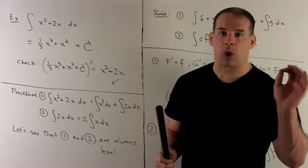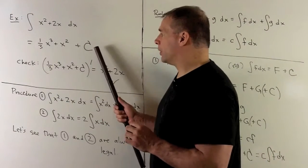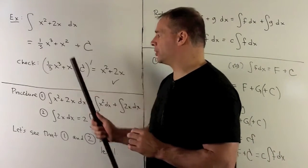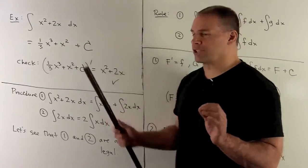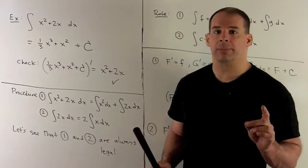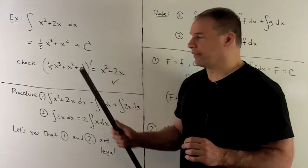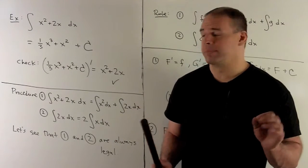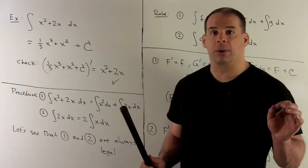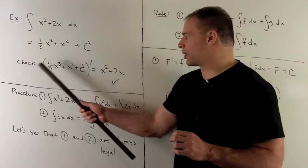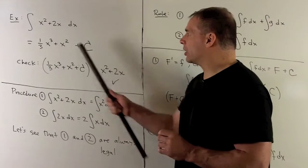We're not done yet — we check our work. If we take the derivative of our result, we expect to get x squared plus 2x back. The derivative of x cubed is 3x squared, which cancels with the one-third, leaving x squared. The derivative of x squared is 2x. The derivative of a constant is 0. So our check works out — we take the derivative and get back our integrand.